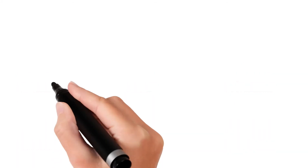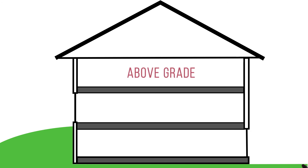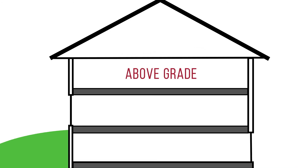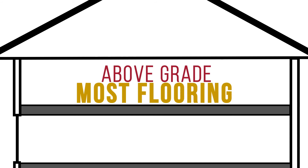Last is above grade. Above grade refers to any level of the house that is at least 18 inches above the ground. Because this level is not prone to absorbing ground moisture, it's ideal for most flooring. For more flooring information, contact your Impressions dealer.